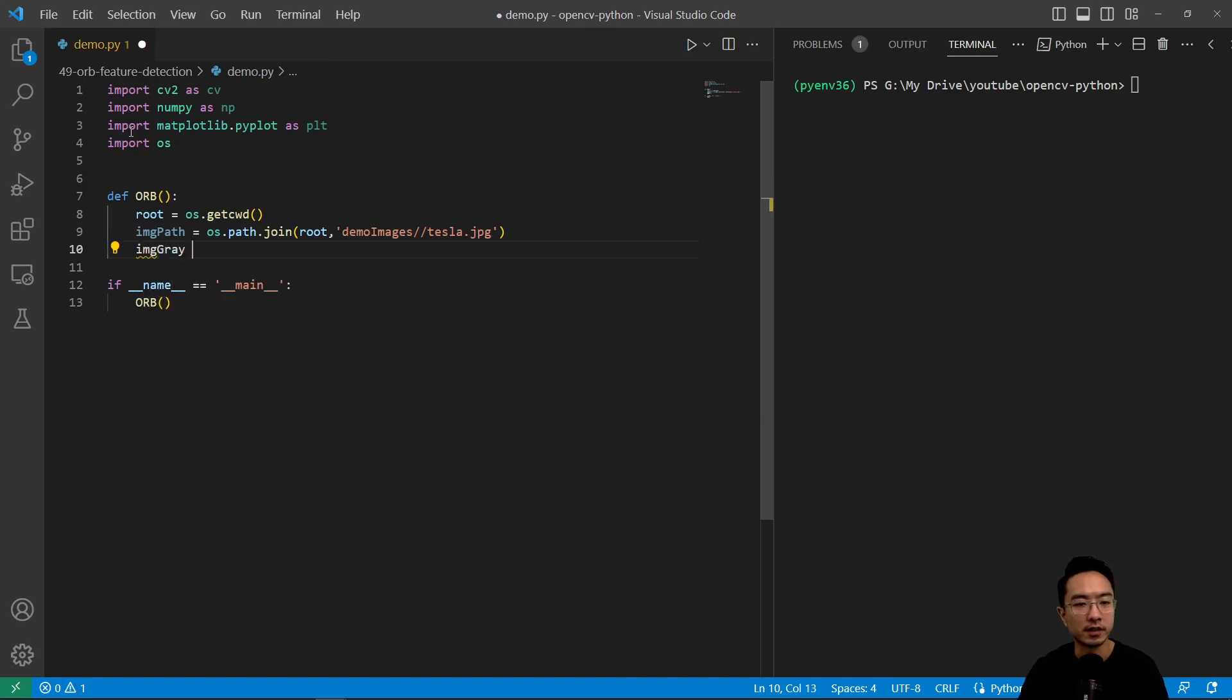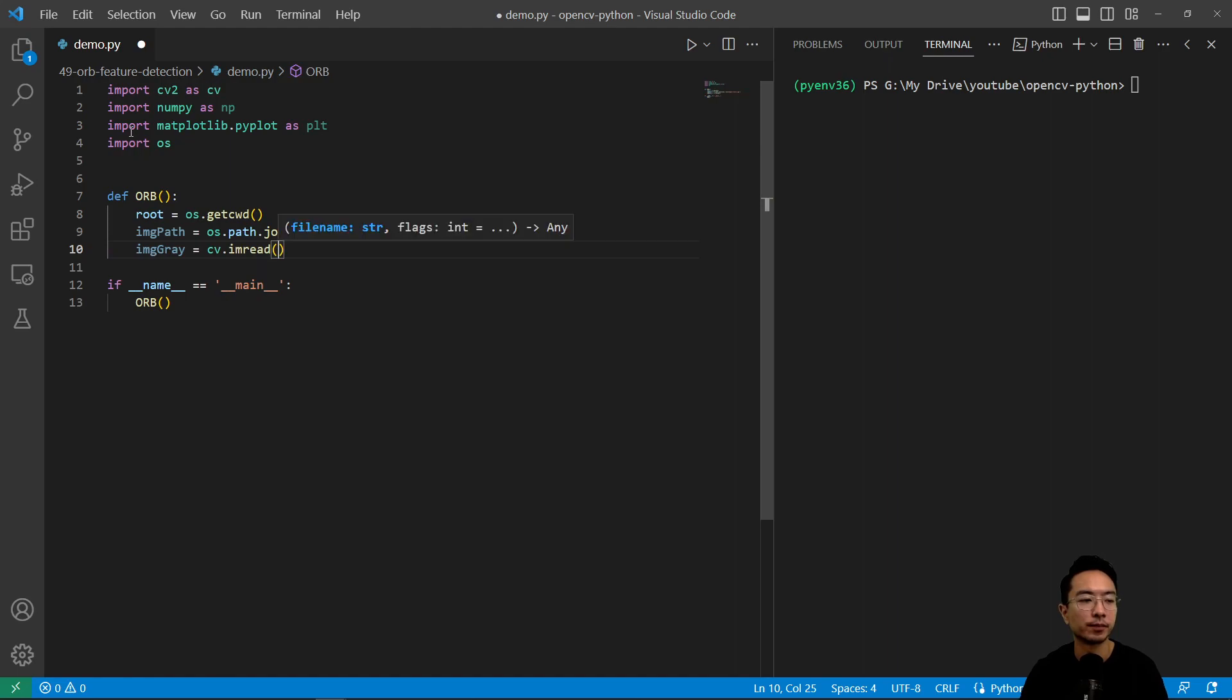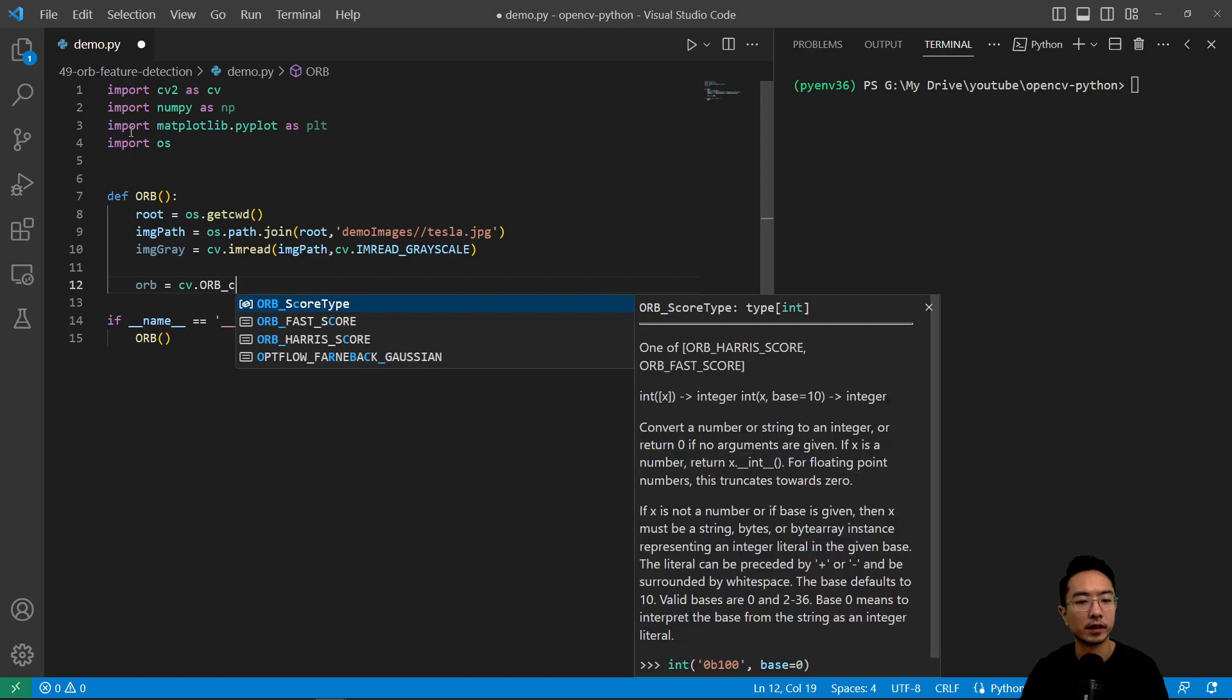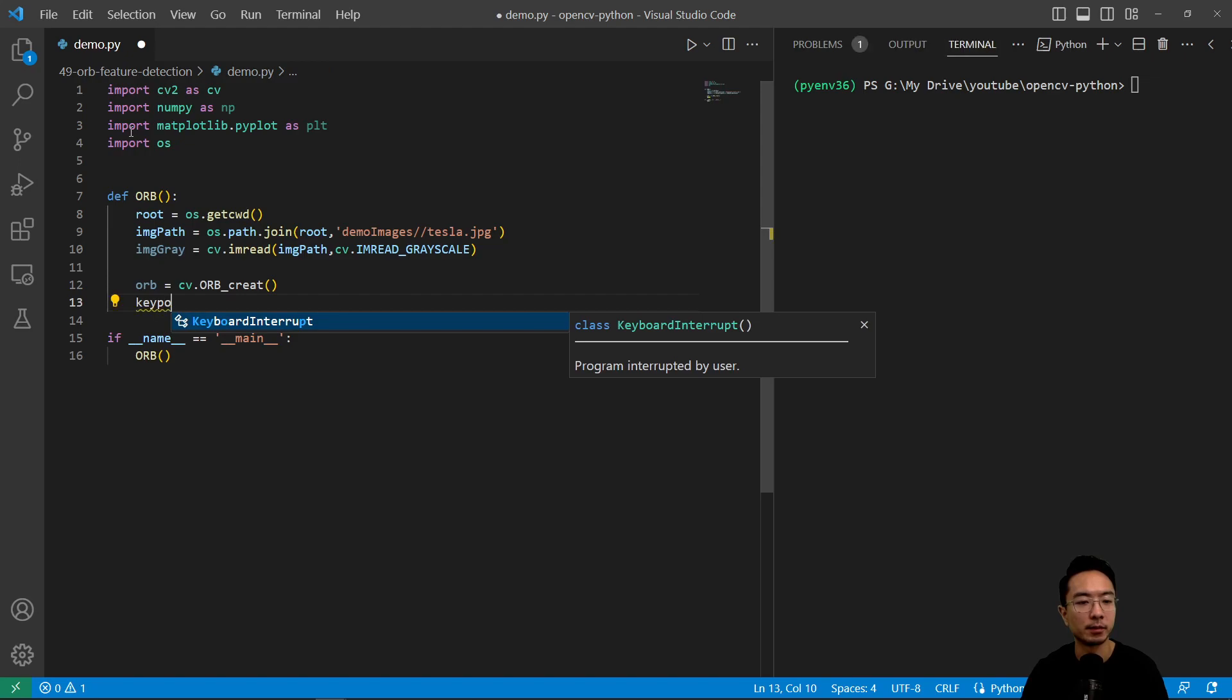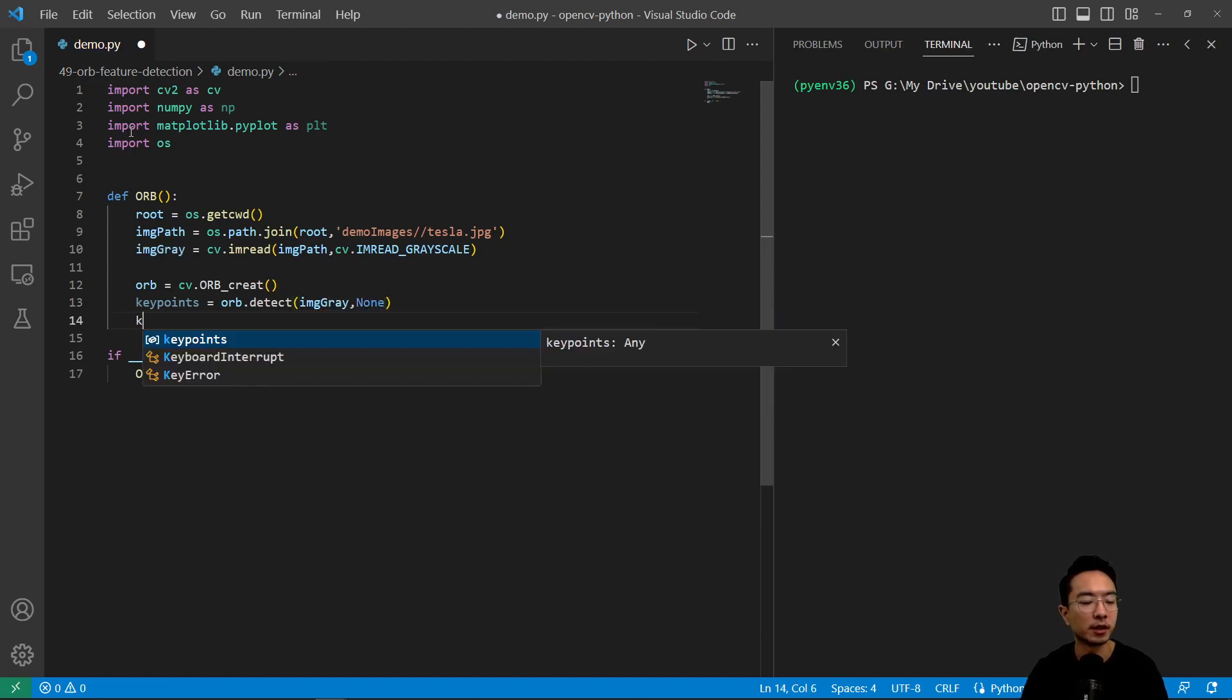We're going to get our grayscale image here. So cv.imread and pass in our image path, cv.imread grayscale. Then we have our orb equals cv.orb_create. And we have our keypoint equals orb.detect, and pass in our grayscale image and none for the second parameter.